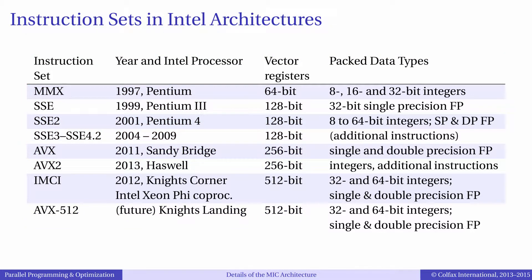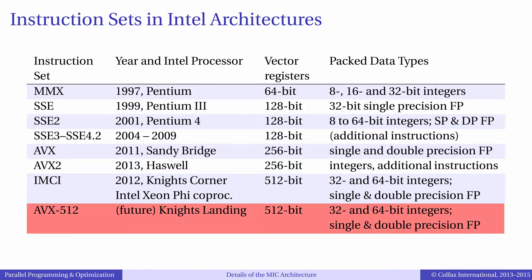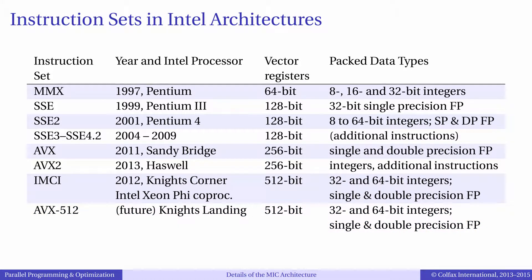Another important fact is that applications for the Knight's Corner architecture, the first generation of Xeon Phi, will not be binary compatible with Knight's Landing, the second generation. This is why, throughout this training, we promote a portable and future-proof method of programming which relies on the compiler to automatically vectorize the code.